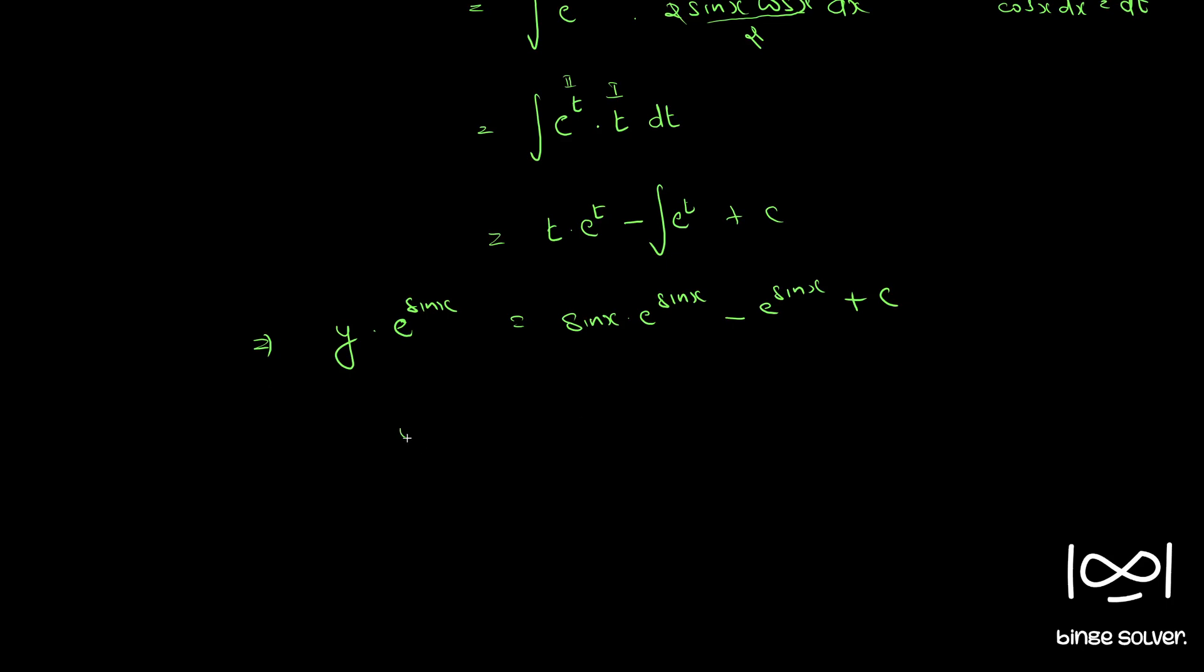If you divide throughout by e raised to sin x, we have y equals sin x minus 1 plus c into e raised to minus sin x. So this is the final solution.